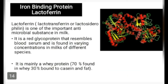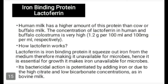Iron binding protein — lactoferrin: lactoferrin is one of the most important antimicrobial substances in milk. It is a red glycoprotein that resembles blood serum and is found in varying concentrations in milks of different species. It is mainly a whey protein — 70% found in whey and 30% bound to casein and fat. Human milk has a higher amount of this protein than cow or buffalo milk. The concentration of lactoferrin in human and buffalo colostrum is very high, around 1.2 grams per 100 ml.